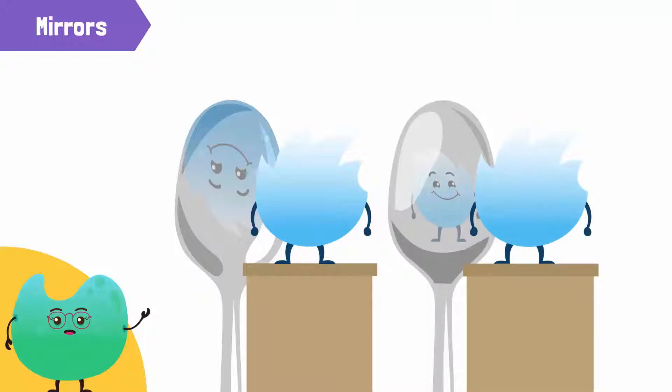I think the spoon is a type of mirror. There are different types of mirrors around us. The surface of a shiny spoon is a good example of a curved mirror. Curved mirrors are called spherical mirrors.